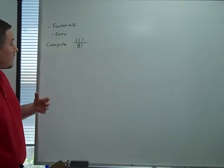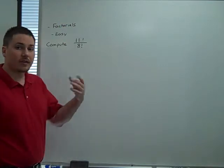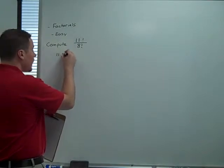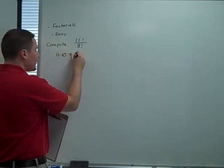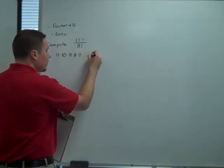So, first off, 11 factorial. That's 11 times every number before. So let's write that out. 11 times 10 times 9 times 8 times 7 times dot dot dot, all the way down to 1.